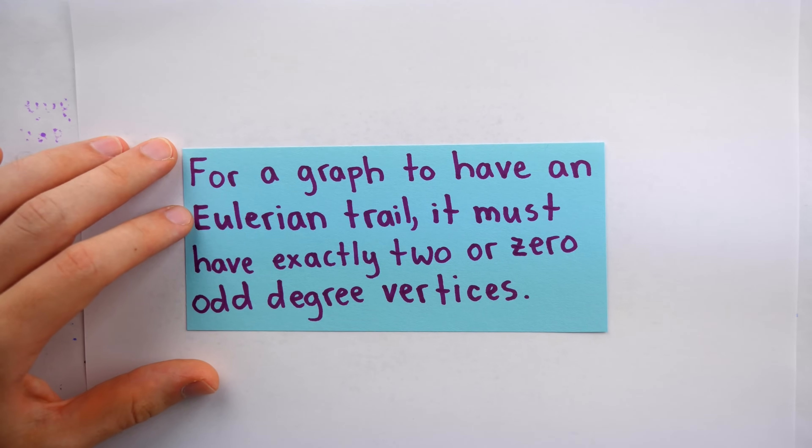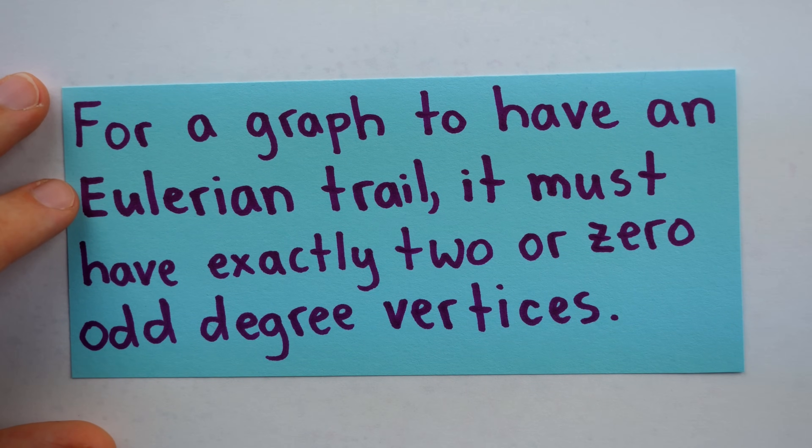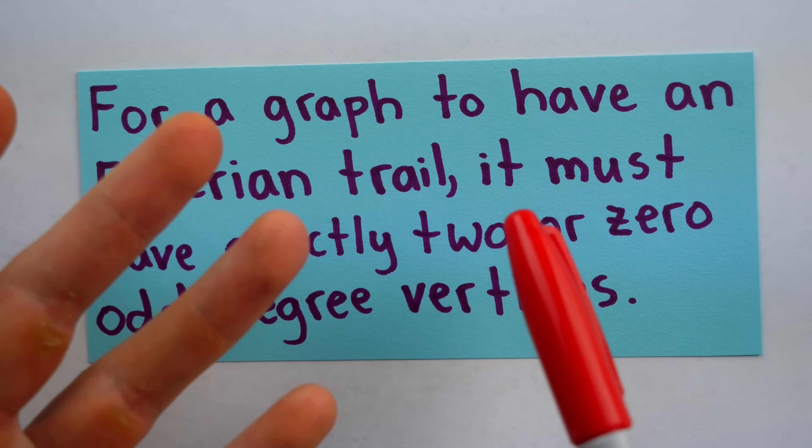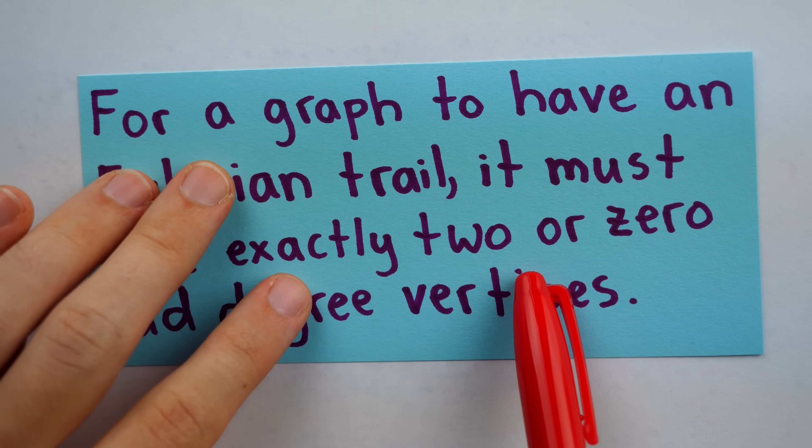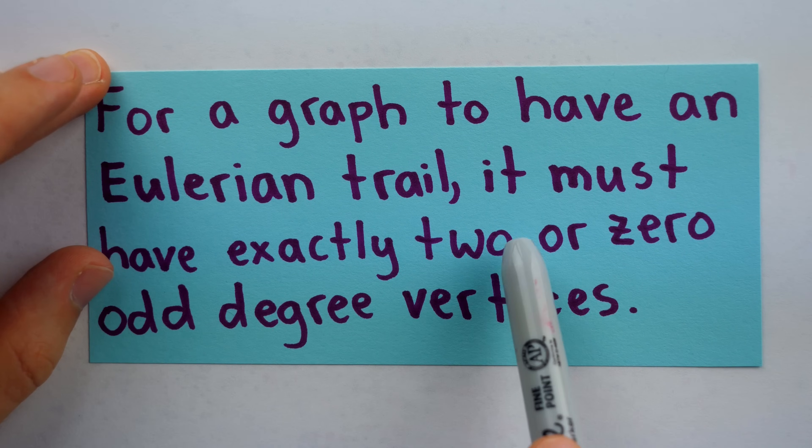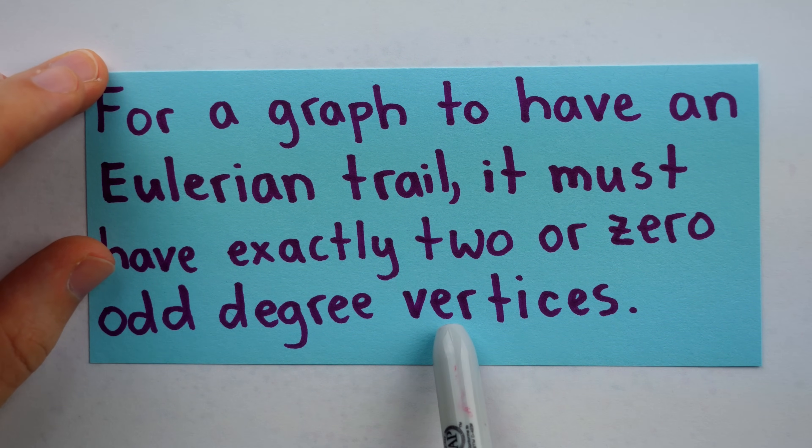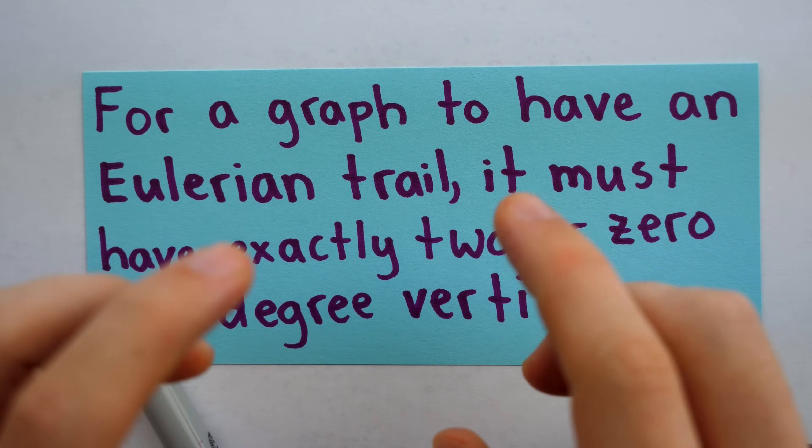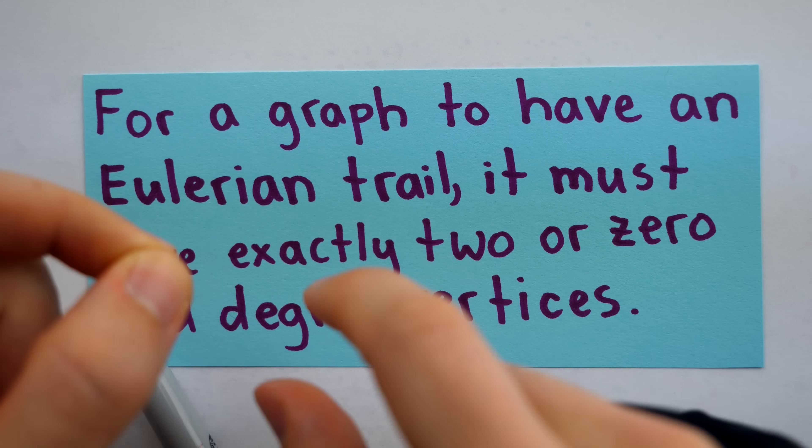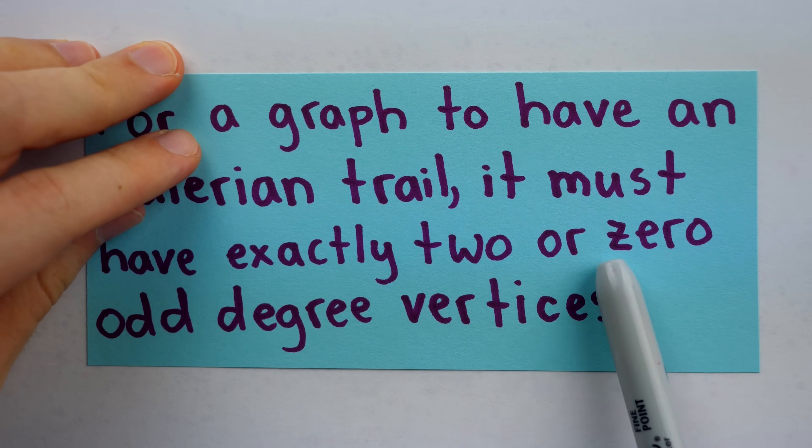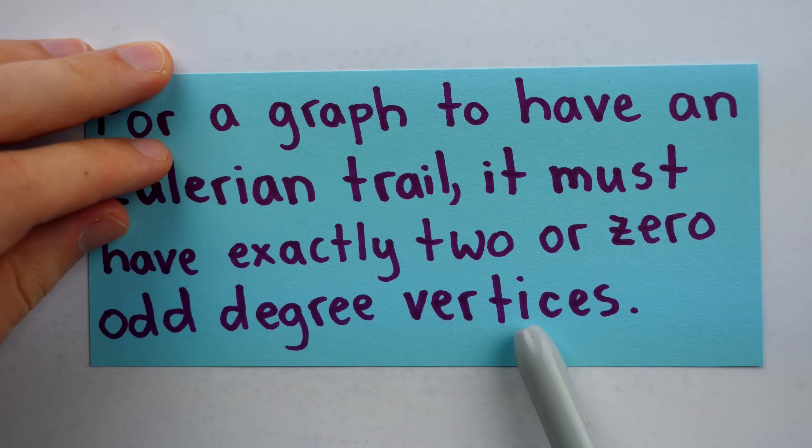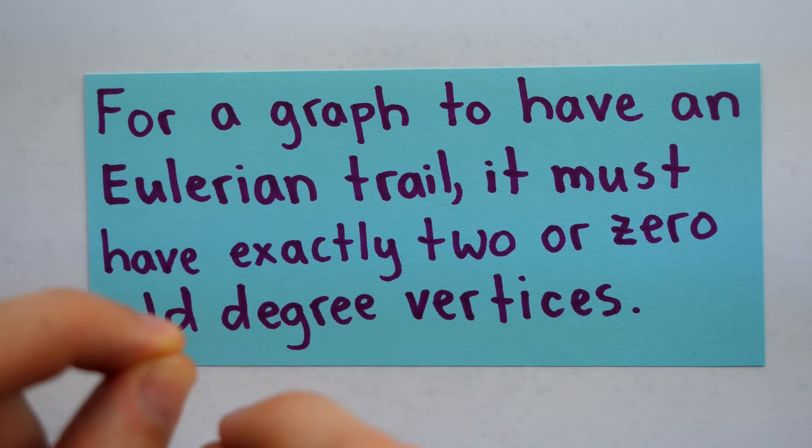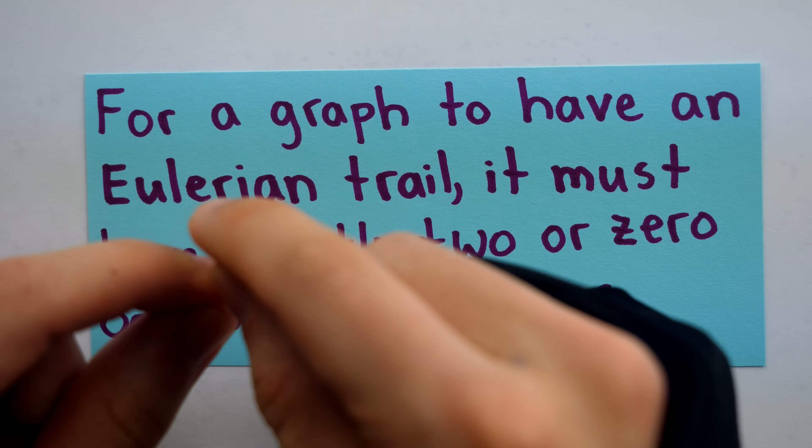Okay, we've established that for a graph to have an Eulerian trail, it must have exactly two or zero odd degree vertices. It must also be connected. But like we said, we're going to assume all of our graphs are connected for this video. If a graph has two odd degree vertices, those will be the starting and ending vertices of an Eulerian trail. And we call such a trail open because it doesn't come back to its starting point. It doesn't close itself. On the other hand, if a graph has zero odd degree vertices, then in fact, it's an Eulerian trail that is closed, which is called an Eulerian circuit. It comes back to its starting point and closes, so to speak.